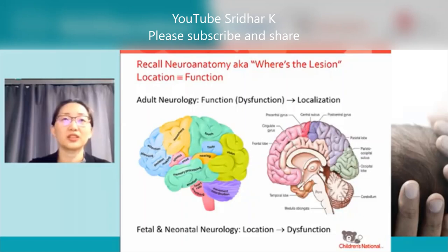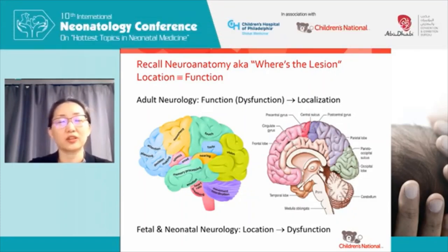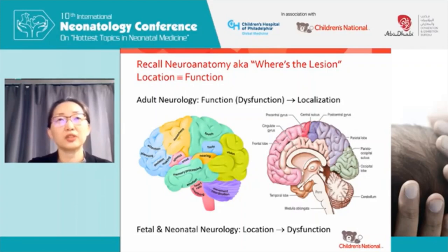In fetal and neonatal neurology, you need to give me a brain image where I can see the lesion, and from the lesion I'm supposed to predict what your exam should look like in two, five, or ten years. Identifying injury is not just about whether you're brain injured or not, but knowing exactly where the injury is and then being able to characterize the severity of injury in that region.